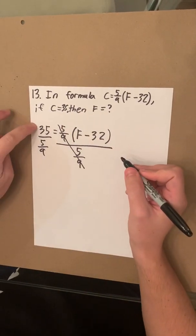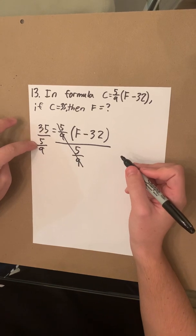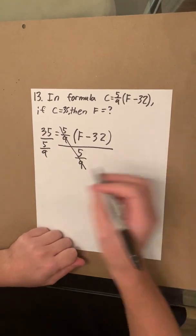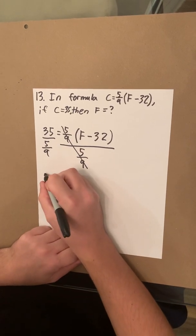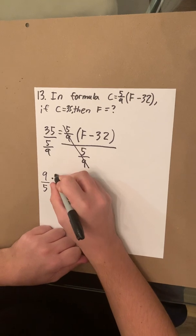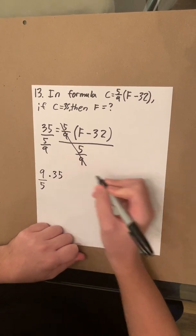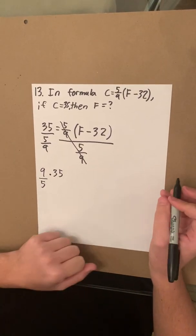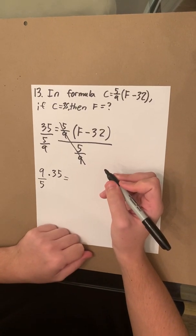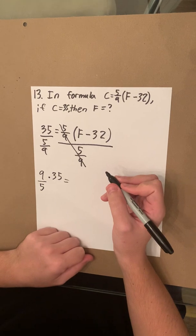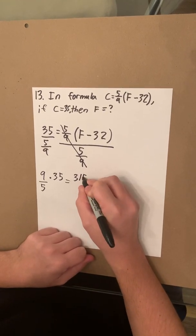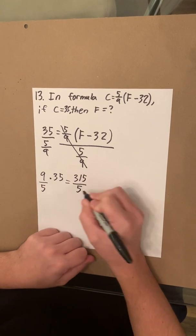So these two cancel out. And when you divide by a fraction, what you're actually doing is multiplying by the reciprocal. So to rewrite this is going to be 9 over 5 times 35, which equals 315 over 5.